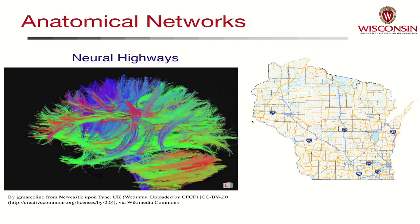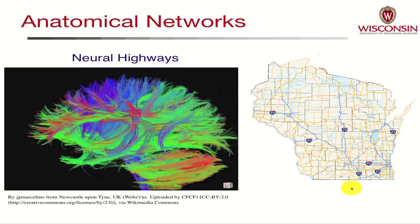When we talk about networks in the brain we can think about networks on several different levels. The first level I want to mention is the idea of an anatomical network, and in this image here we're showing these individual fibers as the wiring diagram of the brain — how does each area connect to every other area? An analogy to a map: they're the highways and the roads of the brain. Where can the traffic flow? What are the neural highways? That's an anatomical network.